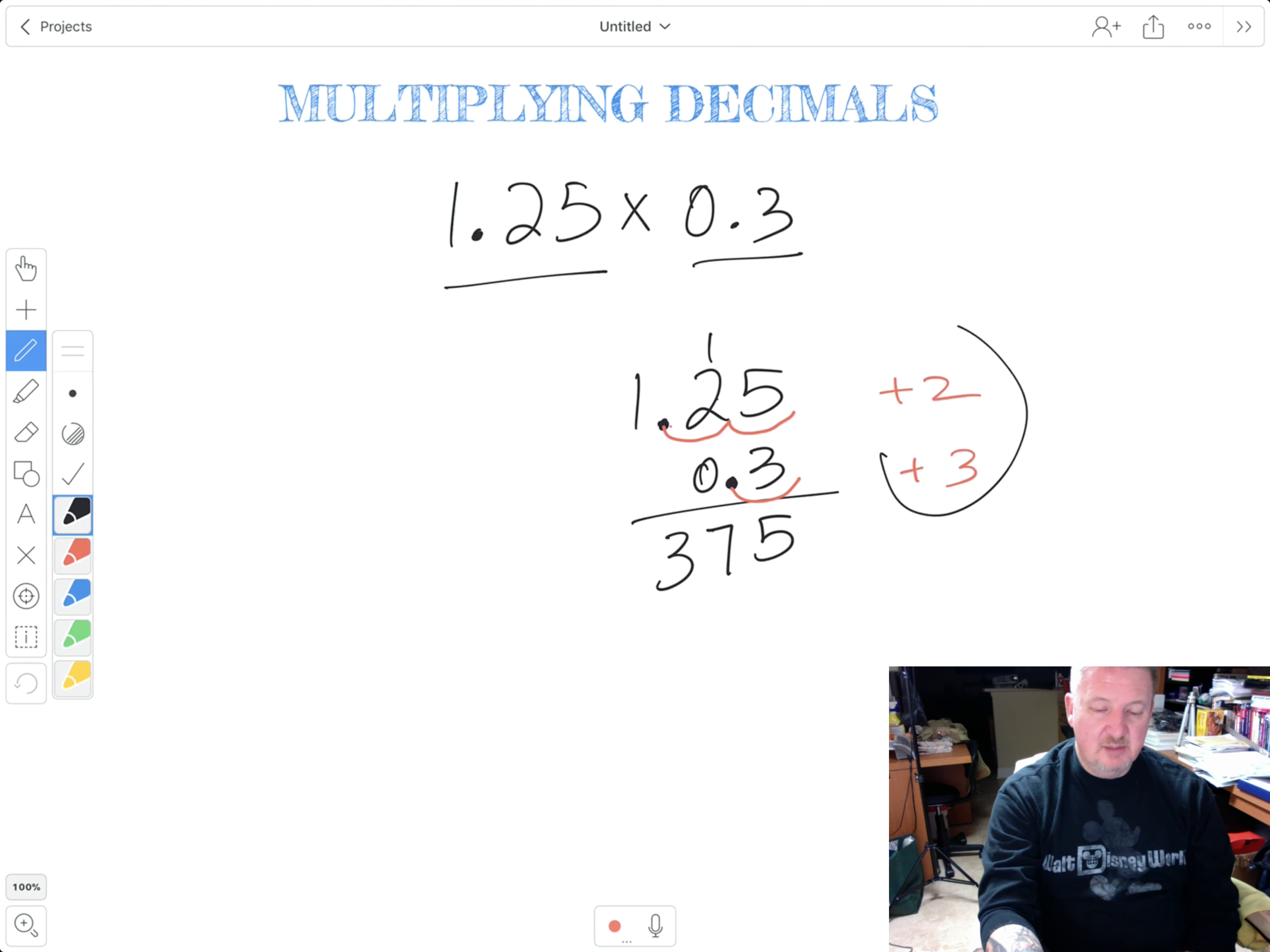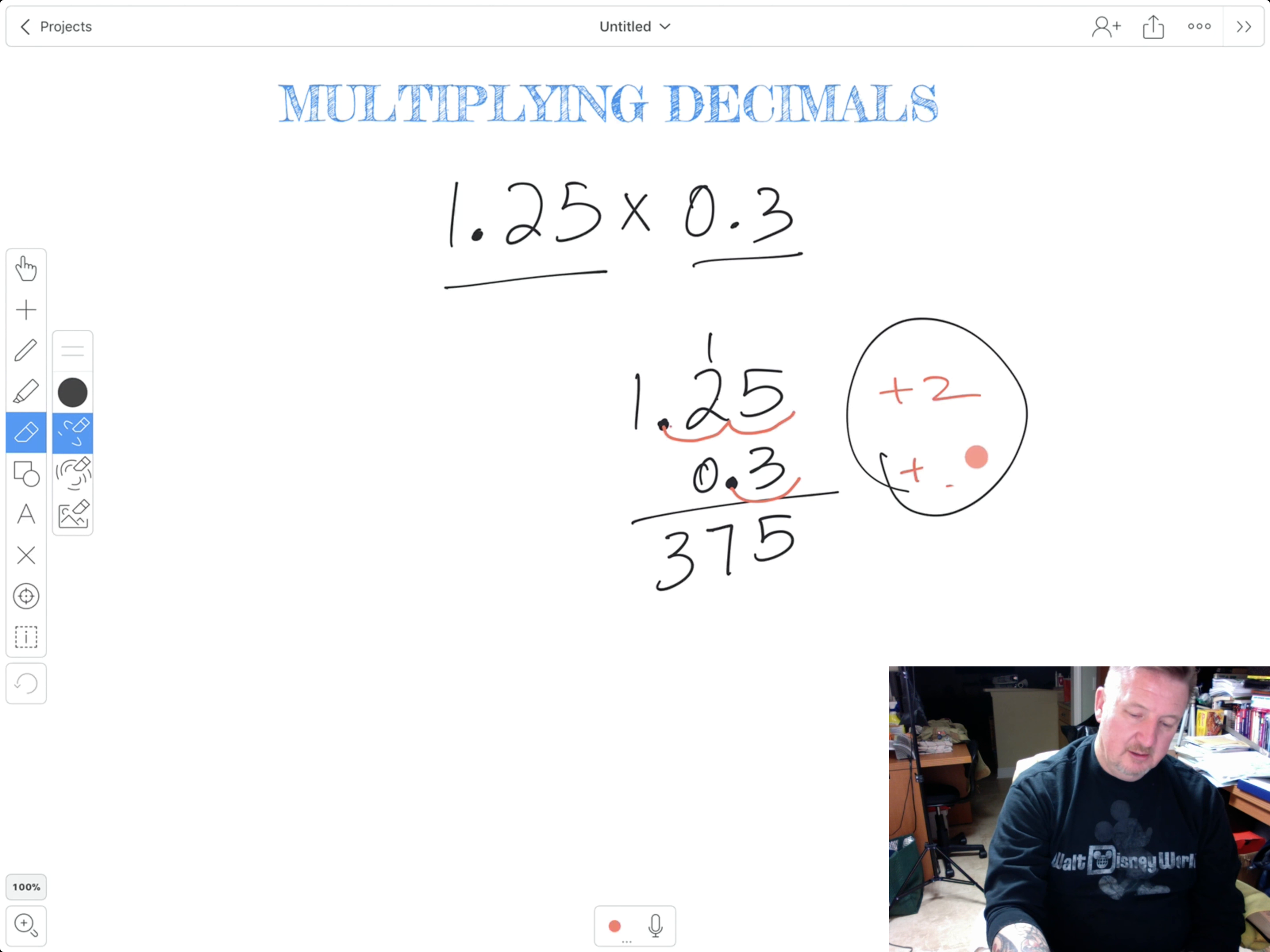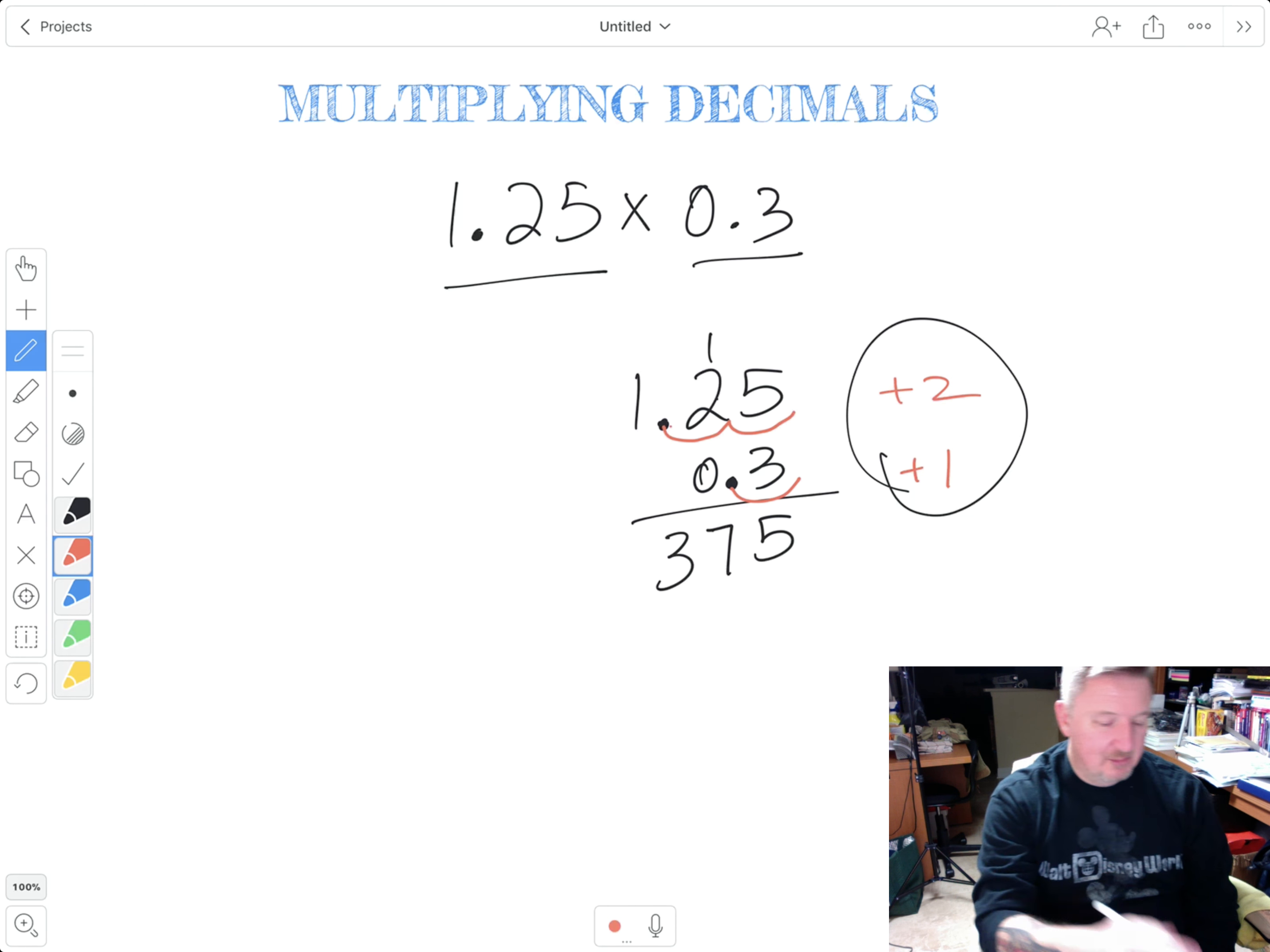Now, this is where these numbers come into effect. In the top number, I had two decimal places. In the bottom number, I only had one decimal place. I was thinking ahead of the game here.